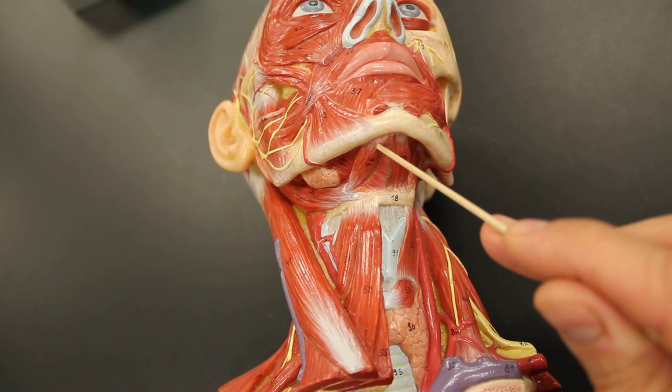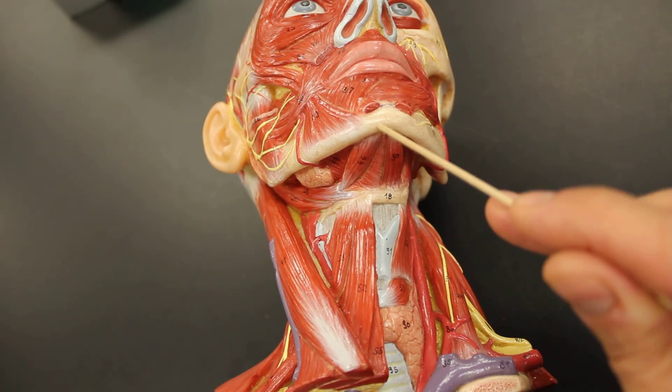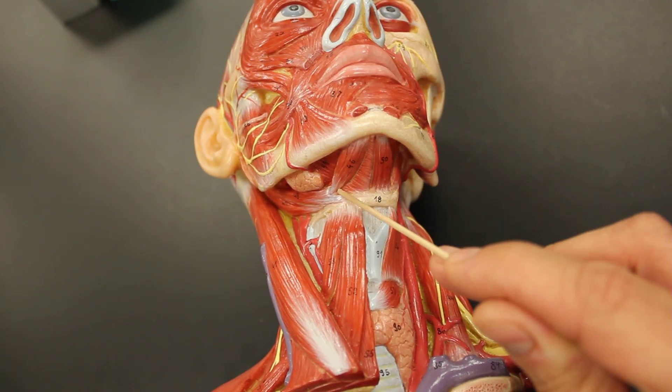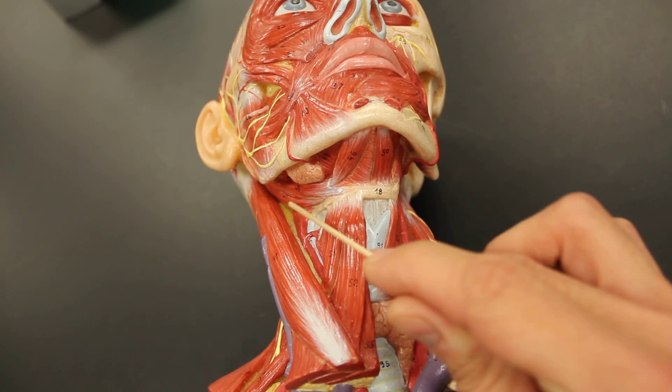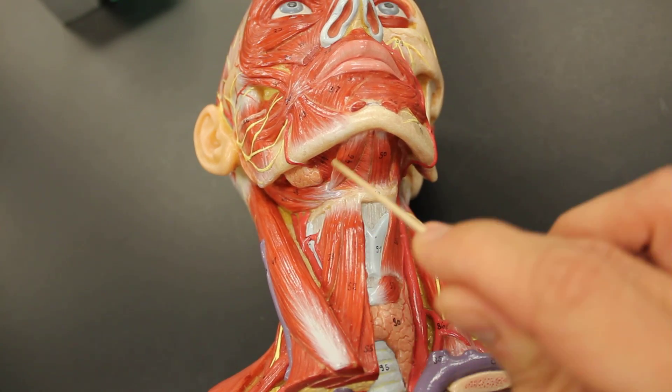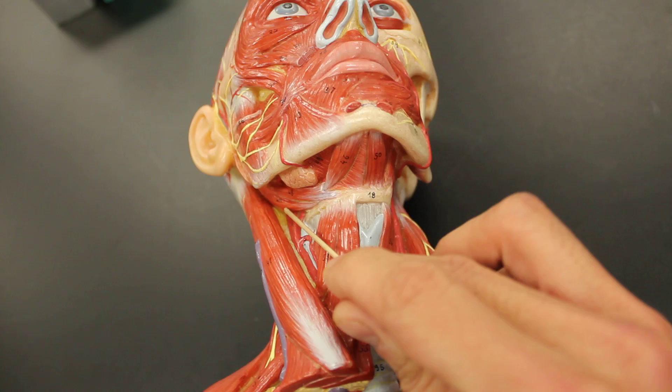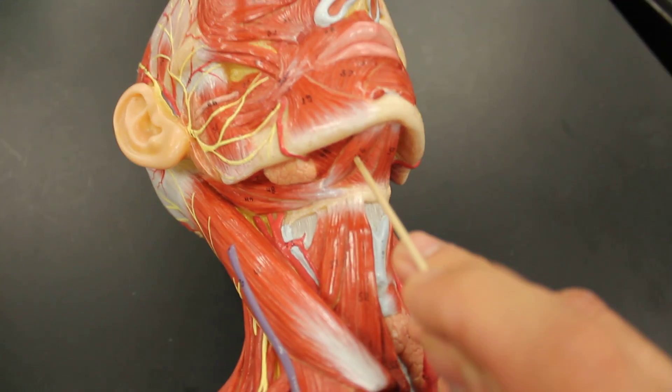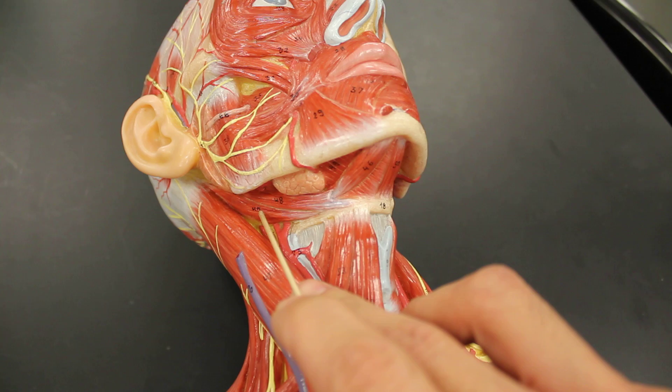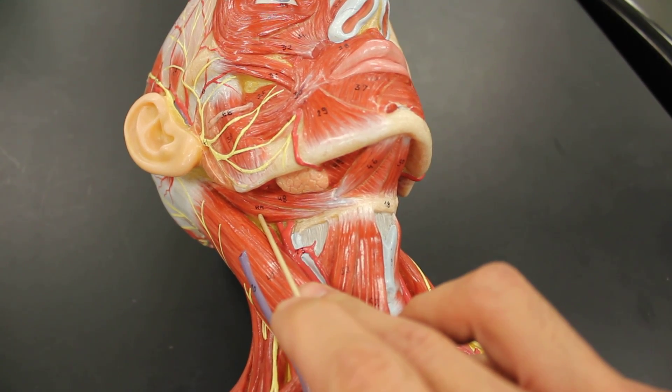It's called the digastric, literally saying two bellies. One that comes from the mandible to the hyoid and then swings around and goes to the mastoid process. So that is digastric. This is all one muscle. As you can see, this is the anterior belly, and then this would be considered the posterior belly of digastric.